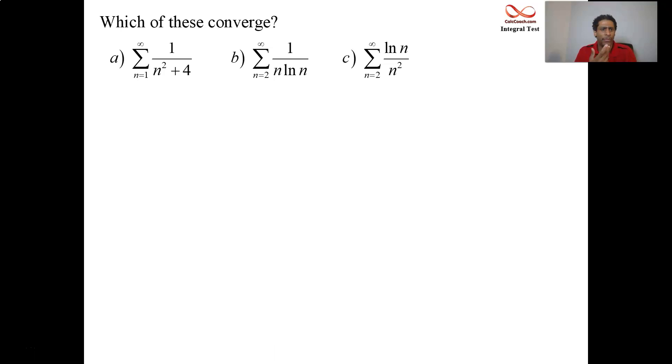First up, we have 1 over n squared plus 4. The plus 4 stops the series from being a p-series. Without the plus 4, it would be exactly a p-series. 1 over n squared converges.